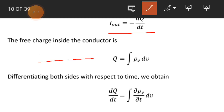The free charge inside the given piece of the conductor can be calculated with the help of this integration: the integration of ρv dV gives you the free charge inside the conductor, where ρv is the volume charge density — the charge per unit volume — and dV is the differential volume of the conductor.